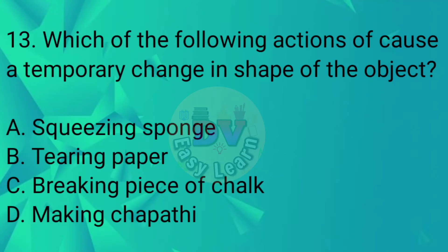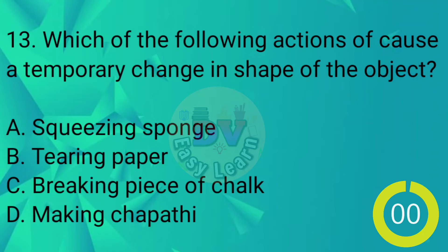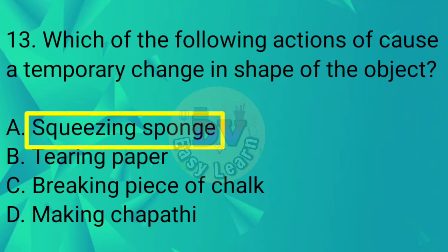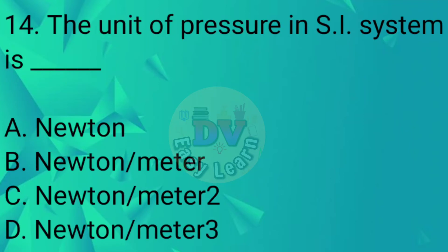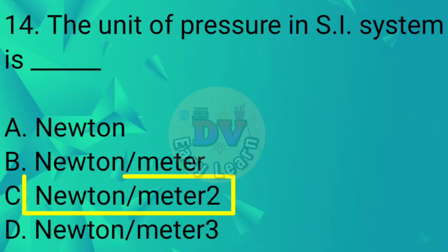Question No. 13: Which of the following actions cause a temporary change in the shape of the object? Correct answer: Squeezing a sponge. Question No. 14: The unit of pressure in the SI system is — Correct answer: Newton per meter square.